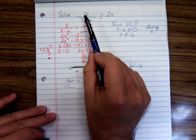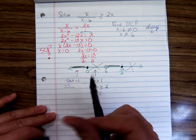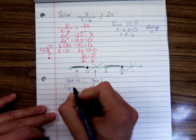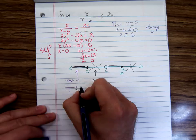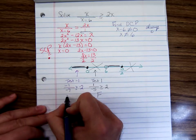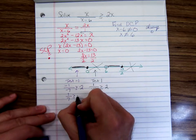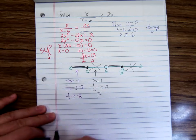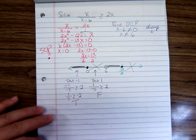We'd have negative 1 over negative 1 minus 6 is negative 7, greater than or equal to 2 times negative 1, negative 2. So we have 1 seventh greater than or equal to negative 2. Now a positive is sure bigger than a negative. So that is true.